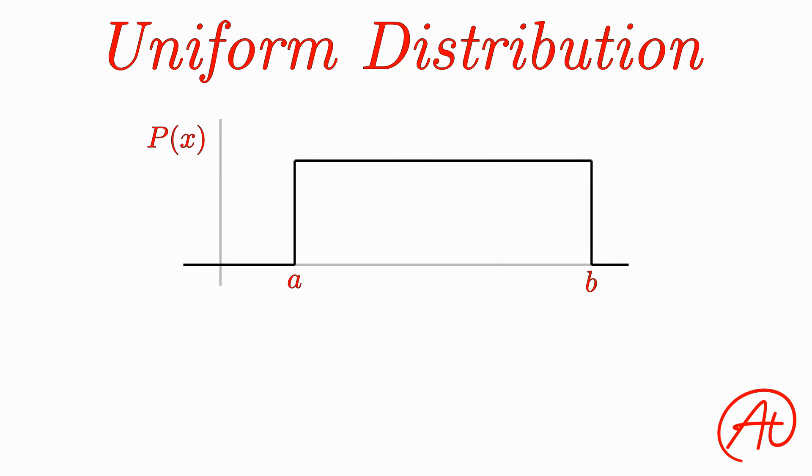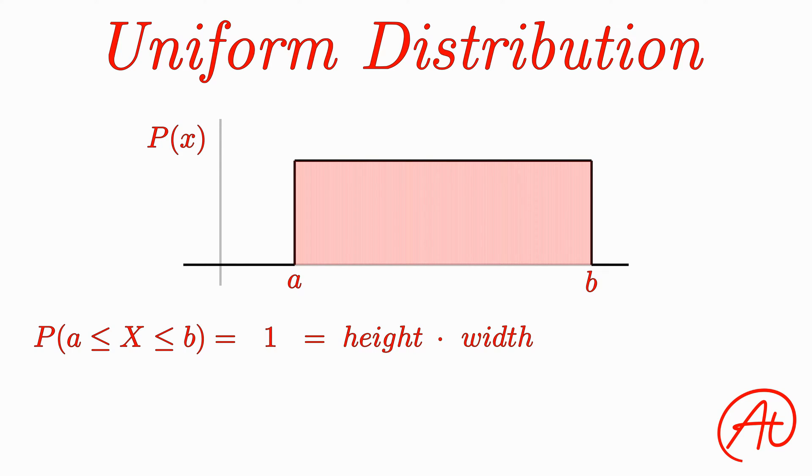But what is this constant probability? We already know that if we add up all the probabilities of all the outcomes of a certain event, or in other words, find the total area under any probability distribution, the result must equal 1. Since this area is a nice and simple rectangle, we can find its area by multiplying its height by its width. The width is simply found by subtracting b minus a. And now we can solve this equation for what the height must be. Dividing both sides by b minus a, we get that the height of this distribution must be 1 over b minus a.